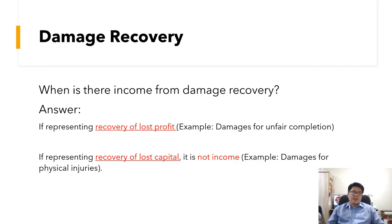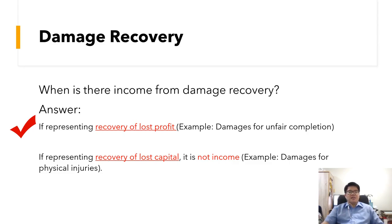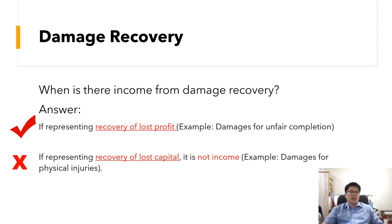Regarding damage recovery: if it is a recovery of lost profit, it is income — for example, damages for unfair competition. If it is a recovery of lost capital, it is not income — examples include damages for physical injuries, or recovery from fire damages or collection from insurance, because these are a recovery of lost capital.